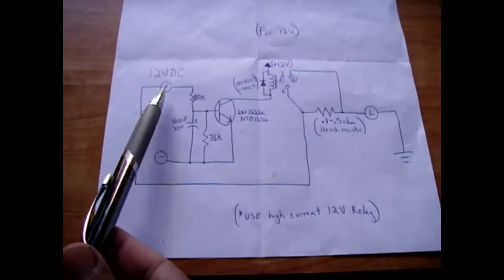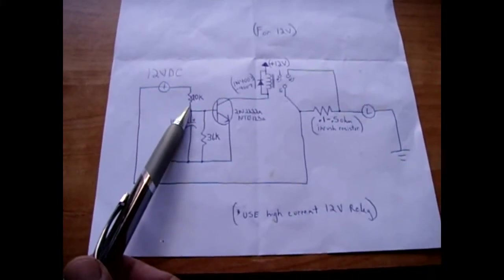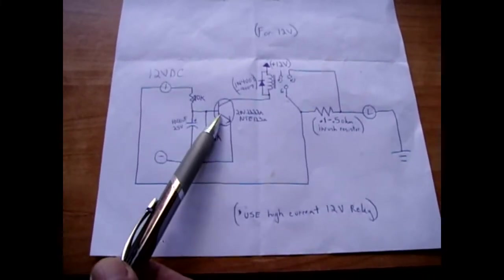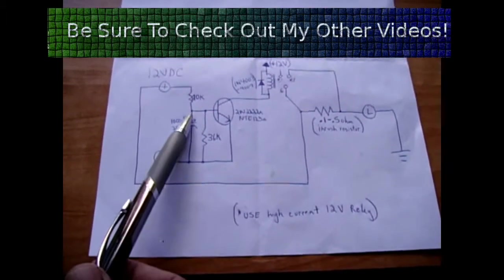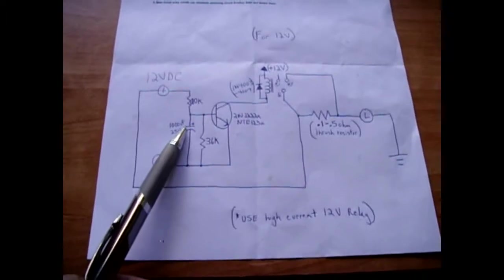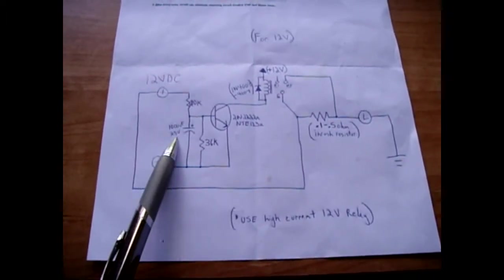You have your battery positive into a 20k resistor and that goes into the base of a 2N2222A. From the base you have a 1000 microfarad capacitor going to the negative.